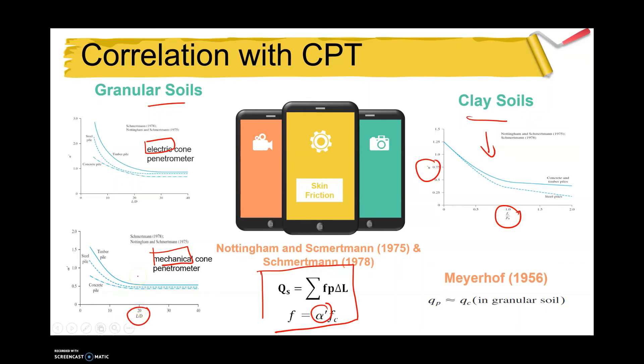Correlation with CPT has also been developed by Meyerhof, which says that the qp value equals qc in granular soil. Later we will go through examples for each method or correlation with N-value and CPT value. Thank you.